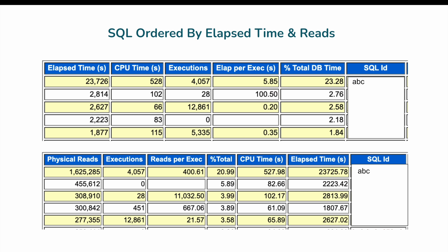The solution is to fine-tune SQLID ABC so it consumes fewer reads. Currently, one execution takes approximately 400 reads, which is significantly high — you should tune it so reads per execution fall below 50 or 100. Alternatively, you can restrict the number of executions in a 10-minute window from 4,000 down to around 500 or 1,000, reducing the load by a factor of four.